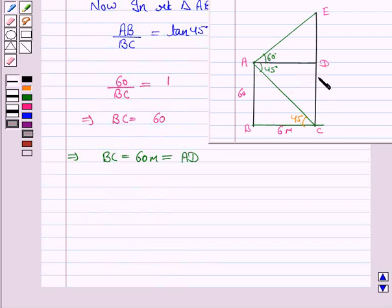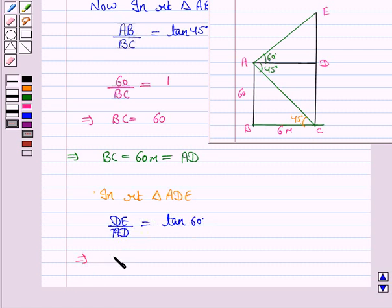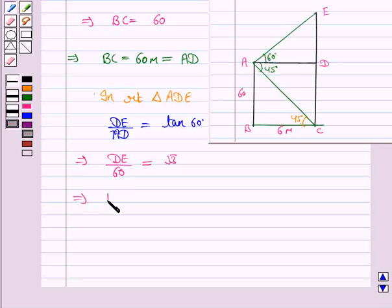We know AB equals CD, which is 60 meters. Now we need to find the length DE. In right triangle ADE, DE/AD (perpendicular/base) equals tan 60°. So DE/60 equals tan 60°, which is √3. This implies DE equals 60√3.